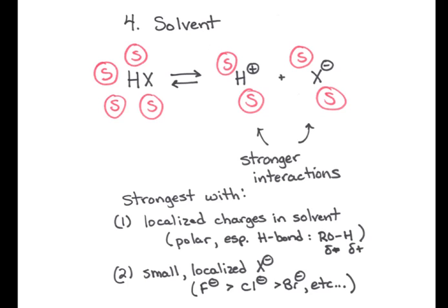There, and the character of X minus, right, the proton's always the same if we're thinking about Brønsted acidity here, but X minus is different. And if X is small and has very localized negative charge, then those solvation interactions also tend to be much stronger. For example, the hydration energy of fluoride, how favorably it interacts with surrounding water molecules, is much stronger than the hydration energy of chloride, which is much stronger than the hydration energy of bromide and so on.